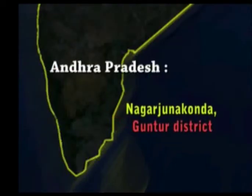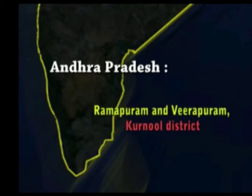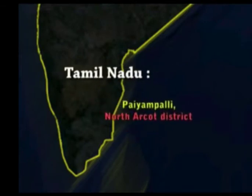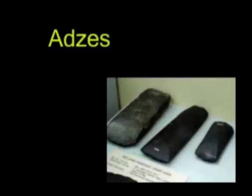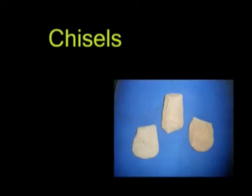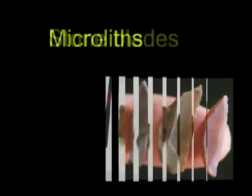Additional important sites include Nagarjunakonda, Ramapuram, and Bhirapuram in Andhra Pradesh, and Paiyampalli in Tamil Nadu. The stone tools of the Neolithic people consist of ground stone tools like axes, adzes, wedges, microliths, and stone plates.